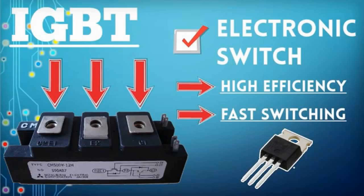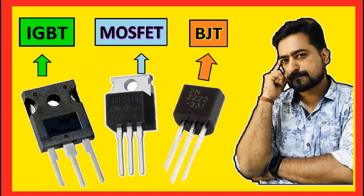Gate — Insulated gate: The gate is made of a metal oxide layer that is insulated from the underlying semiconductor layers by a thin layer of silicon dioxide, SiO2. It controls the switching action by creating or inhibiting a conductive path between the collector and emitter. The gate terminal is crucial for turning the IGBT on and off by applying a voltage to it.